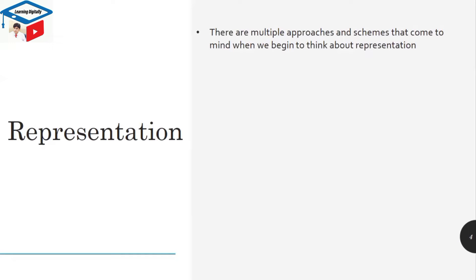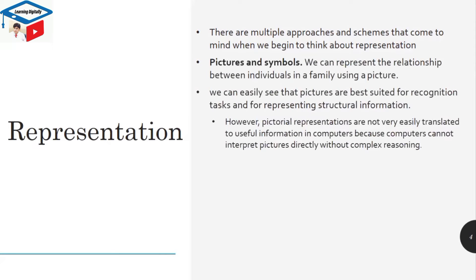There are multiple approaches and schemes that come to mind when we begin to think about representation. For example, pictures and symbols are a very good way to represent knowledge. We can represent the relationship between individuals in a family using a picture. We can easily see that pictures are best suited for recognition tasks and for representing structural information. However, pictorial representations are not very easily translated to useful information in computer because computers cannot interpret pictures directly without complex reasoning.